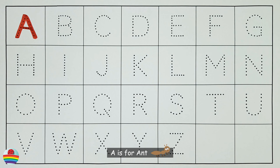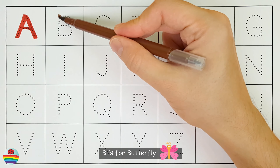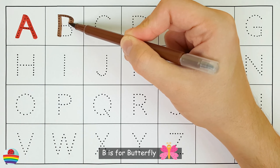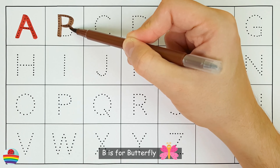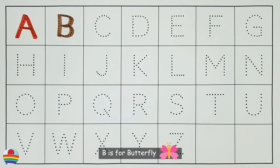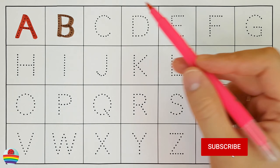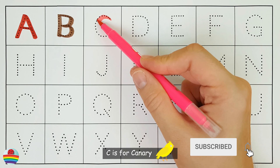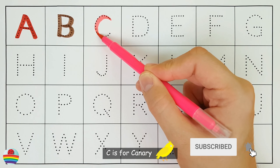A. A is for Ant. A. B. B is for Butterfly. B.